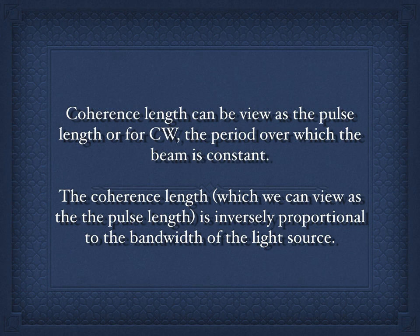Coherence length can be viewed as the pulse length. Or with the CW pulse, it's the period over which the beam is constant. Most OCT sources are not pulsatile. Our Ti:sapphire laser, chromium-doped lasers, femtosecond lasers, they are pulses, but they're the exception to the rule. The clinical sources are CW sources. Then, how do you get this small area like we saw with a pulse? Well, the characteristics of the beam over, let's say, eight femtoseconds is constant. But then, after that eight femtoseconds, it's no longer constant.